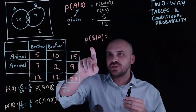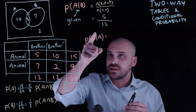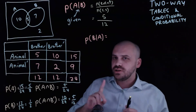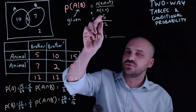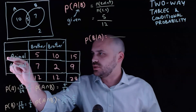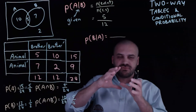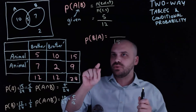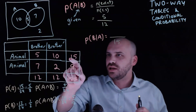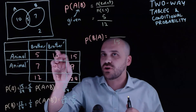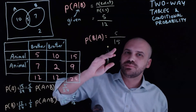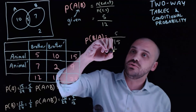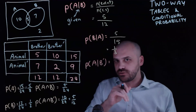Now let's do the reverse: the probability that someone has a brother given that there is an animal in their house. You've met a person and they've told you they've got an animal. This changes the sample space — we know they have an animal, so there are only 15 people they could be. Of those 15 people with an animal, 5 have a brother. So the probability is 5 out of 15, or 1 in 3.